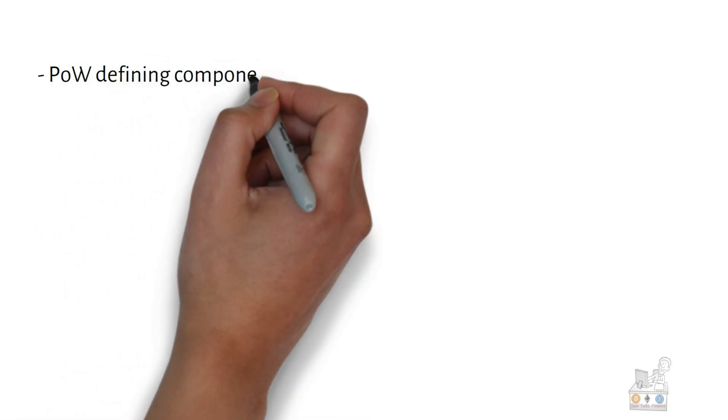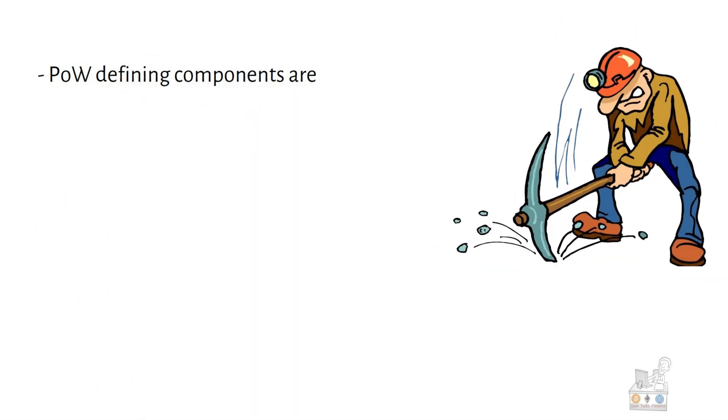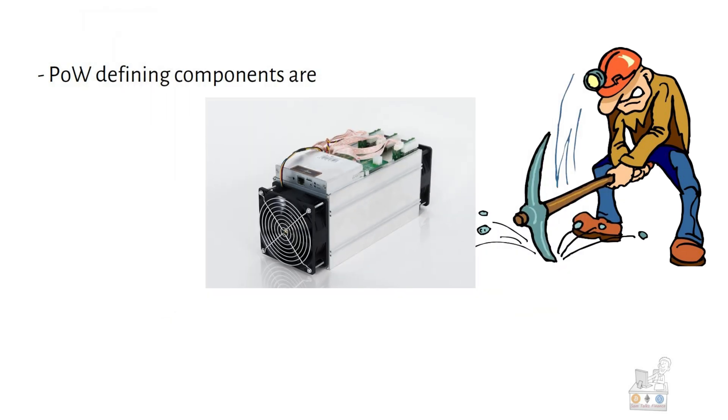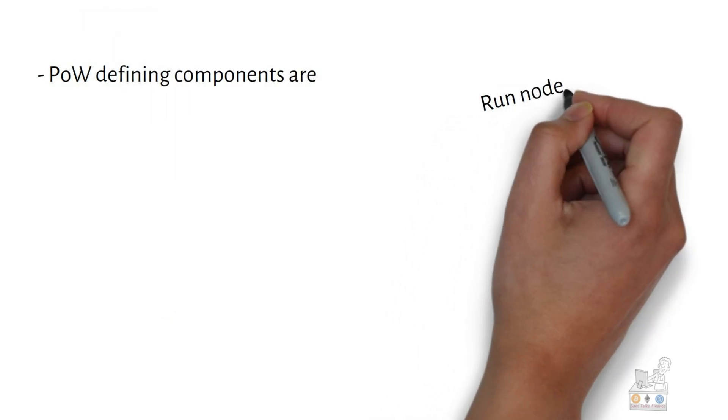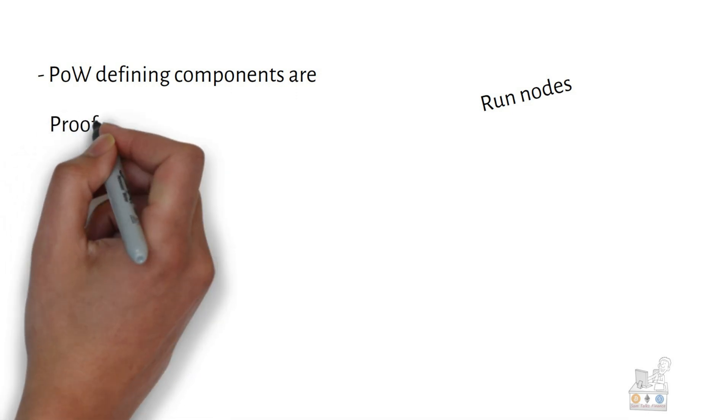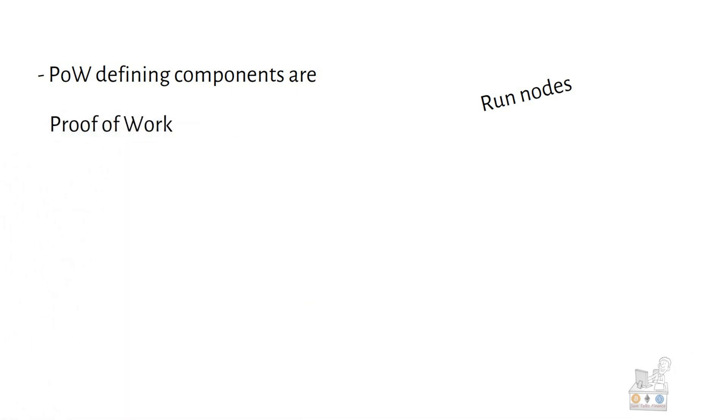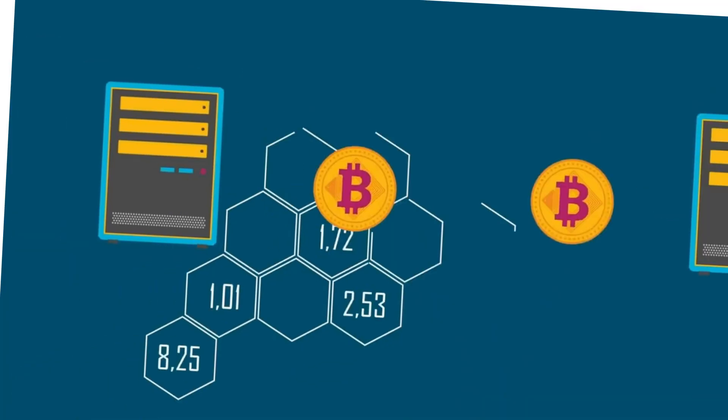In proof-of-work systems, miners verify Bitcoin transactions using electricity. Miners use computer hardware as network nodes and solve mathematical puzzles using computational power.